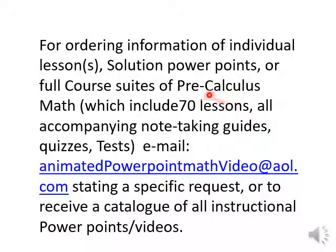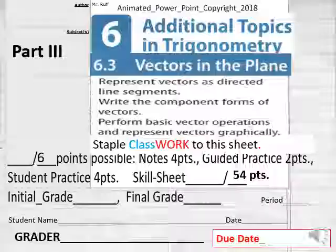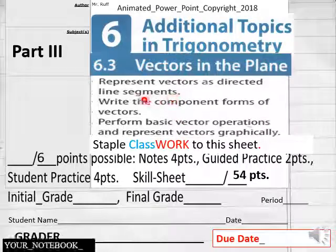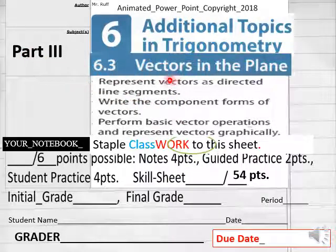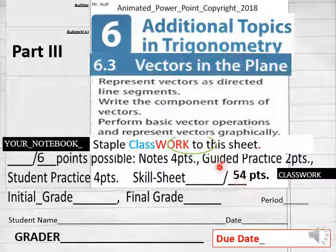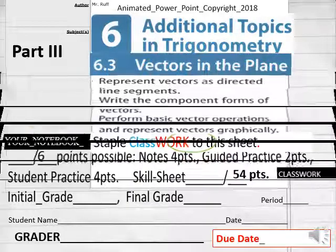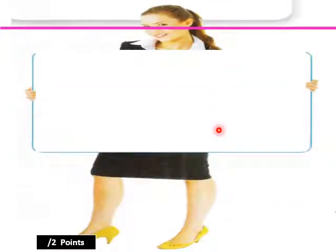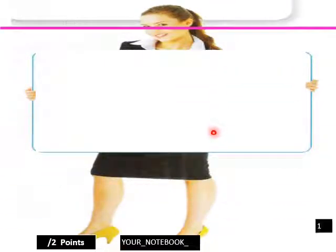Hello everybody, getting ready to do 6.3 part 3 of precalculus math today. Today's lesson is part three: vectors in the plane. You've got six points here for your notebook and then 54 points on your classwork sheet. Today we're not going to start with a bell — we're going right to your notebook.